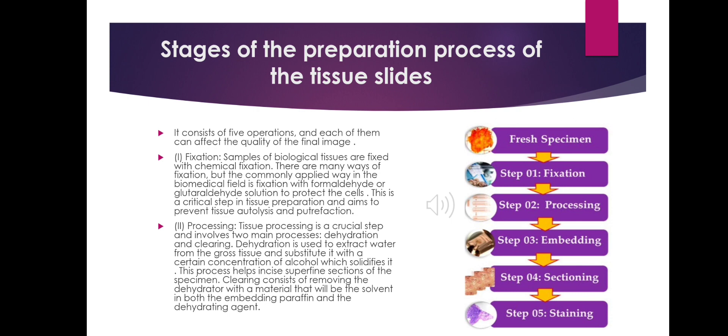Step 2: Processing. Tissue processing is a curation step and involves two main processes: dehydration and clearing. Dehydration is used to extract water from the fresh tissue and substitute it with a certain concentration of alcohol which solidifies it. The process helps in producing superfine sections of the specimen. Clearing consists of removing the dehydrating agent with a material that will serve as the solvent for both the embedding paraffin and the dehydrating agent.